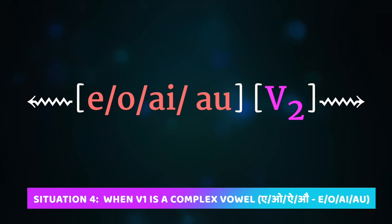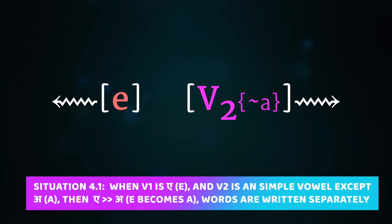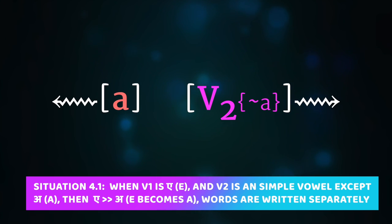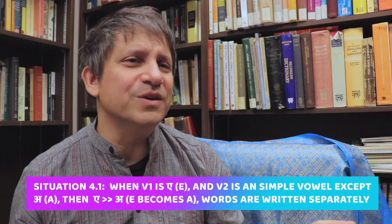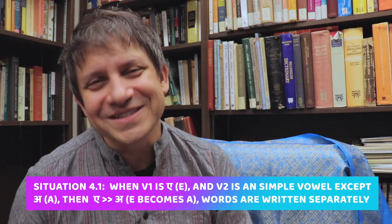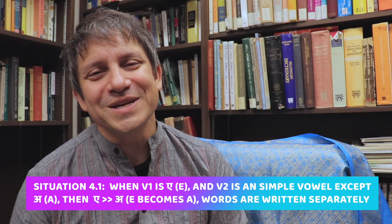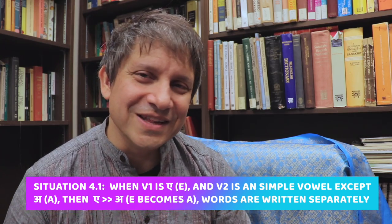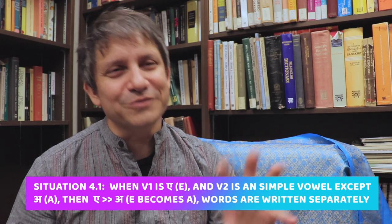Now for the final situation: when V1 is a complex vowel — either one of the guna vowels e or o, or one of the vṛddhi vowels ai and au. Goldman has a technical but useful discussion of the mathematics behind how these transformations happen — how the vowels break down into their parts and reconstitute themselves — which is worth reading carefully if you're interested.